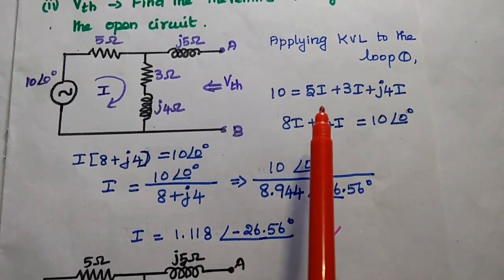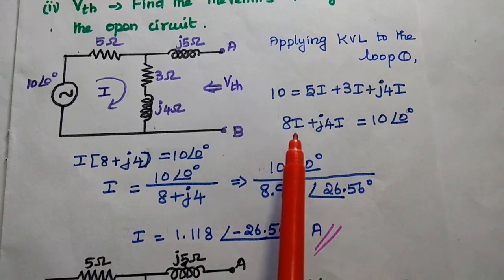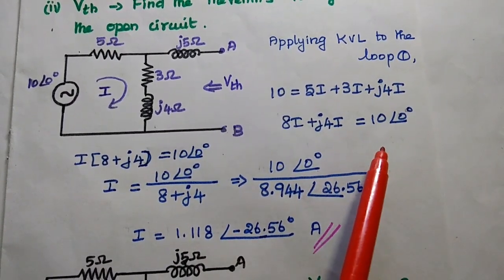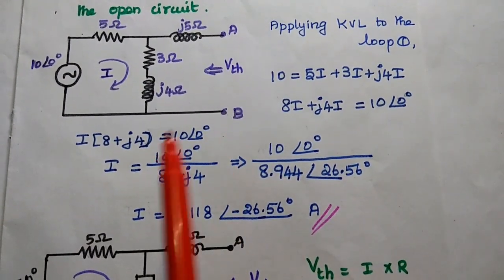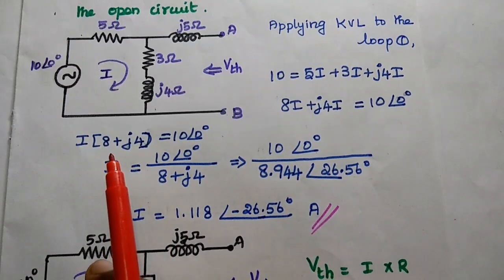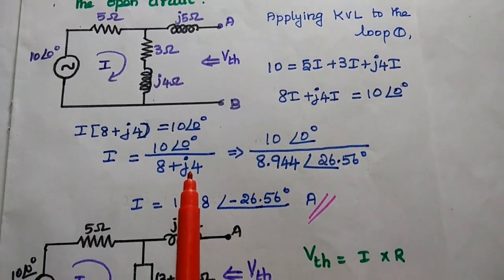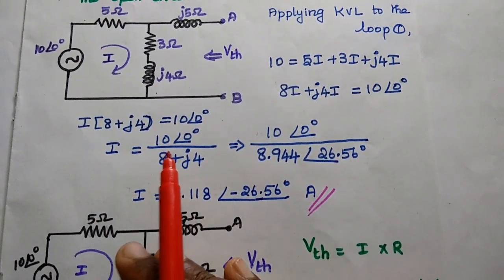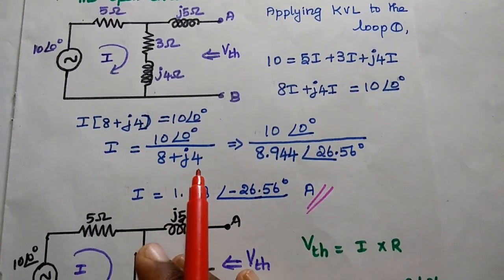We can simply add the real parts. So 5I plus 3I is 8I, plus J4I, equals 10∠0°. Taking I as common, we move 8 plus J4 to the denominator and get the current I equal to 10∠0° divided by 8 plus J4.